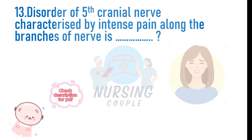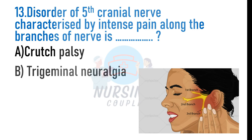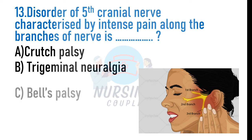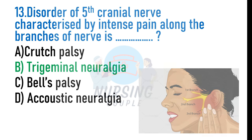Disorder of the fifth cranial nerve characterized by intense pain along the branches of the nerve is: A. Crutch palsy, B. Trigeminal neuralgia, C. Bell's palsy, D. Acoustic neuralgia. The answer is B: Trigeminal neuralgia. Trigeminal neuralgia is a type of chronic pain disorder that involves sudden attacks of severe facial pain. It affects the trigeminal nerve — the fifth cranial nerve — which provides pain signaling to parts of the head and face.